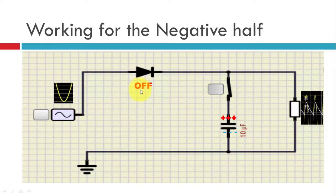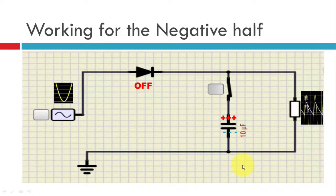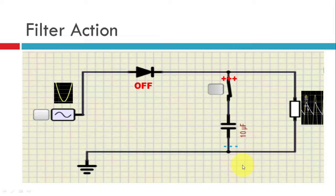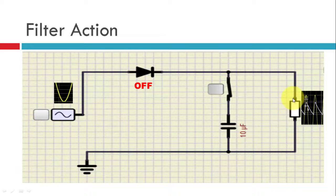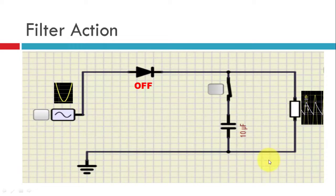Now what happens during the negative half? During the negative half, this diode is off, and because the diode is off it will not conduct. But the charge which was stored during the positive half will actually flow through this particular path and will try to keep the output intact. They will flow to the resistor, so because of this capacitor action the output does not fall to zero but remains at a particular voltage level.